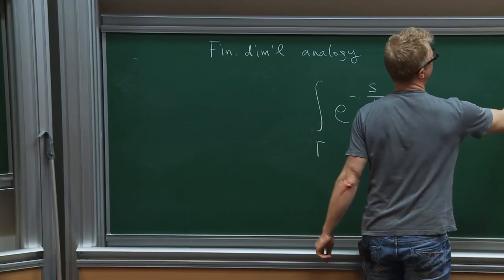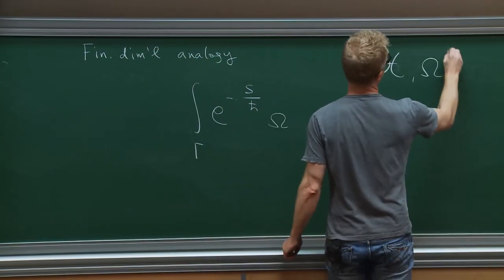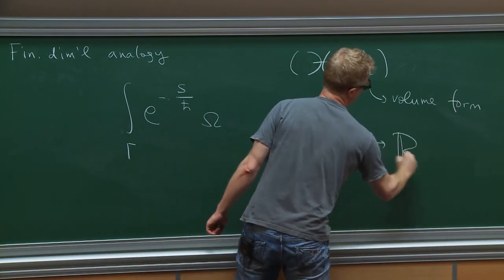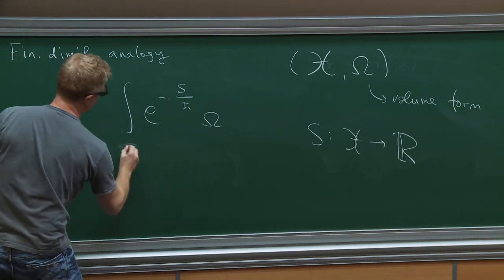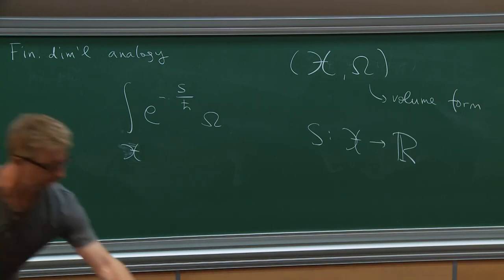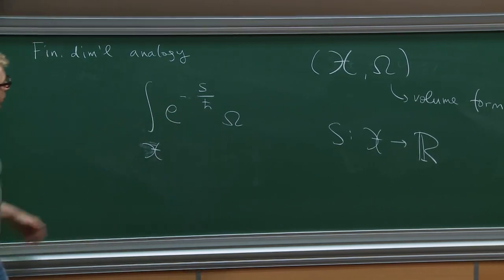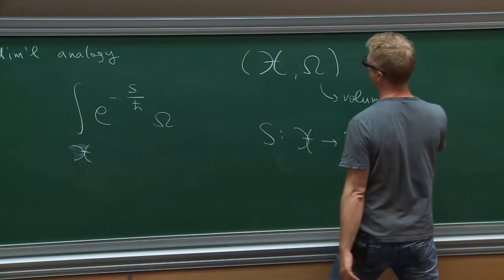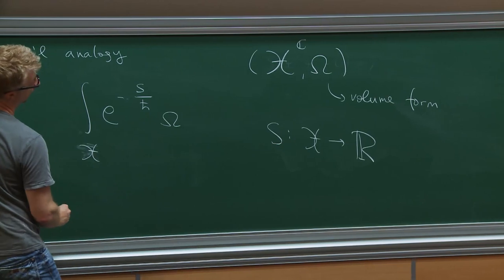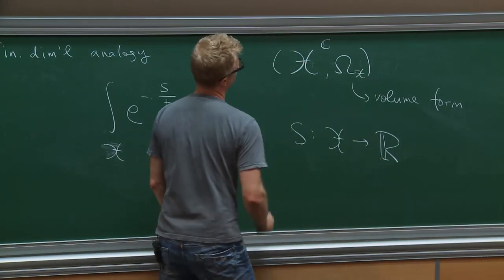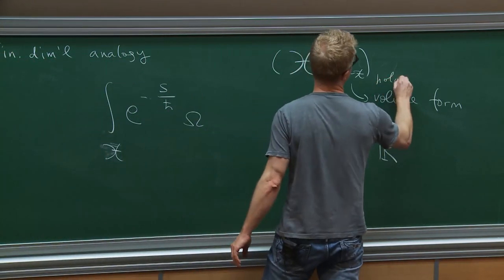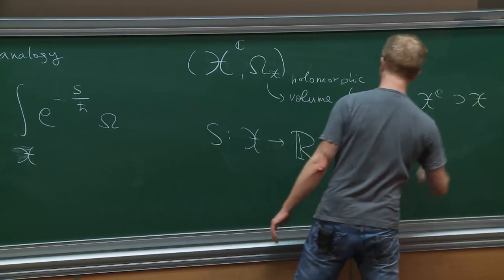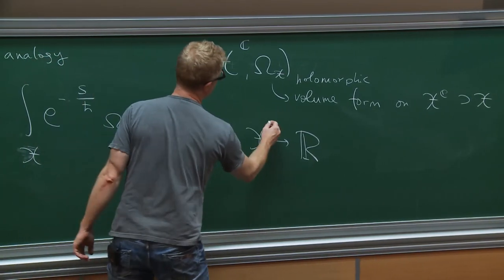You start with some manifold X with volume form omega, where S is a real function — that's the original integral. You want to study this exponential integral as a function of H-bar, the small parameter. You view this original manifold X as sitting inside its complexification. The volume form extends to a holomorphic volume form on the complexification, which contains the original space X, and the function extends to a holomorphic function.